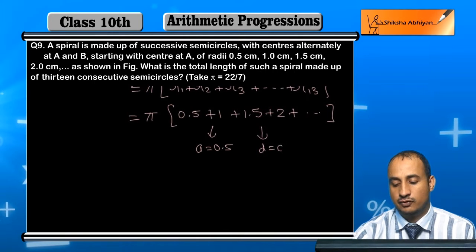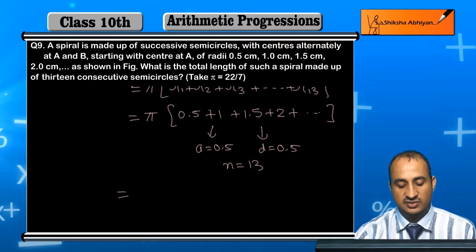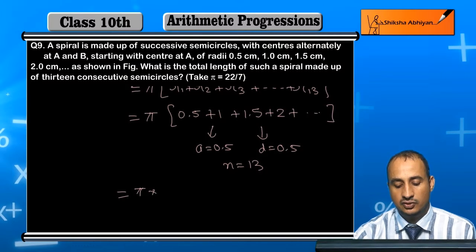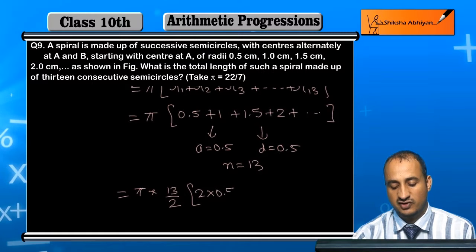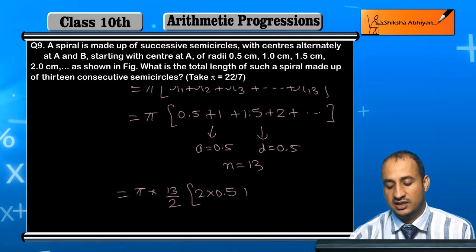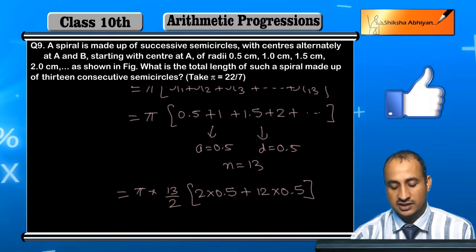This is equal to 0.5 and equal to 13. So, n by 2. I will take 13 by 2 into 2A, that is 2 into 0.5, plus 13 minus 1, that is 12 into 0.5. This is what goes on.